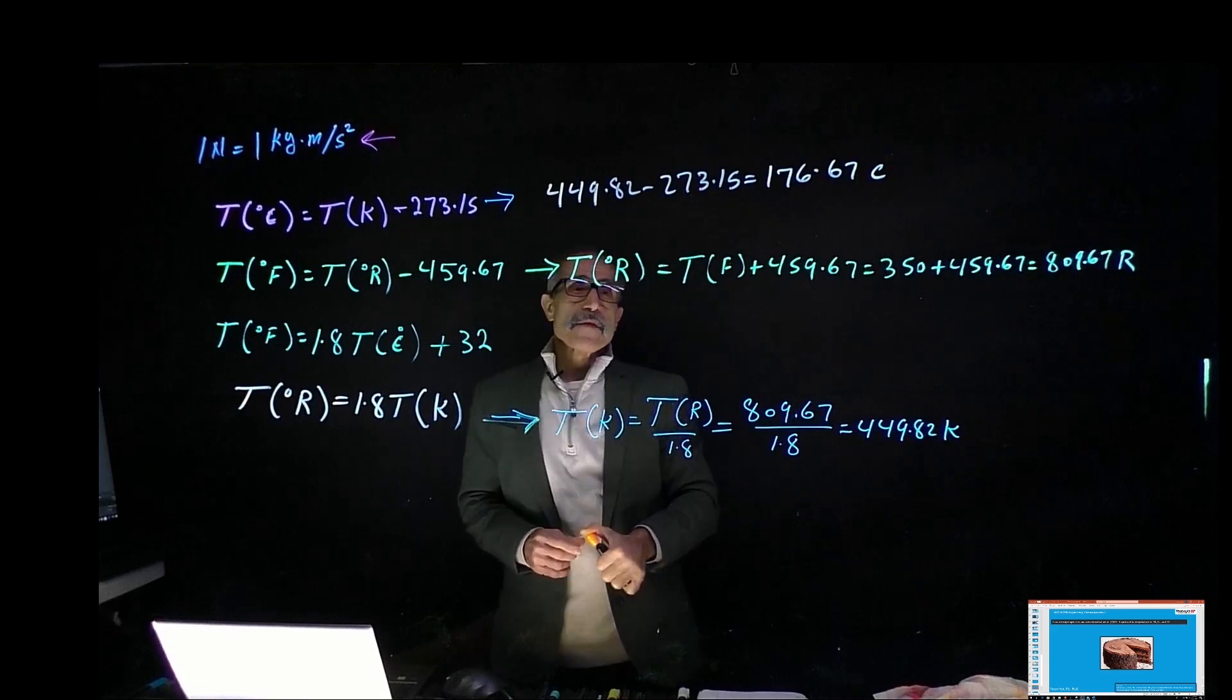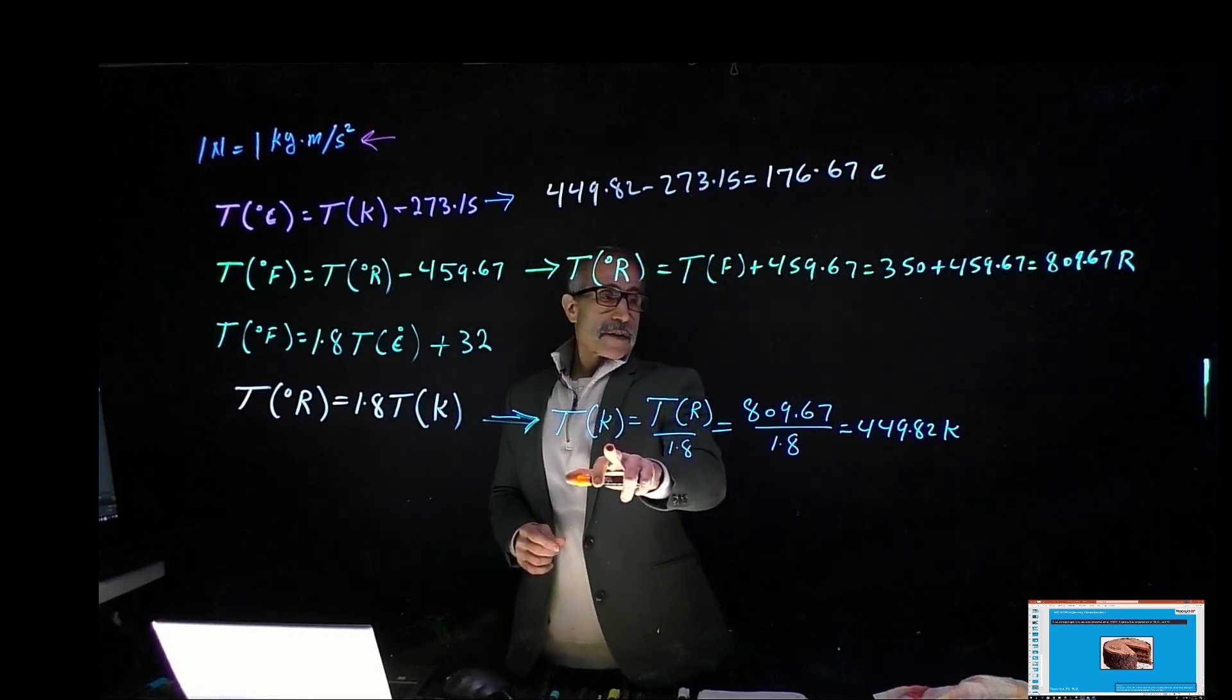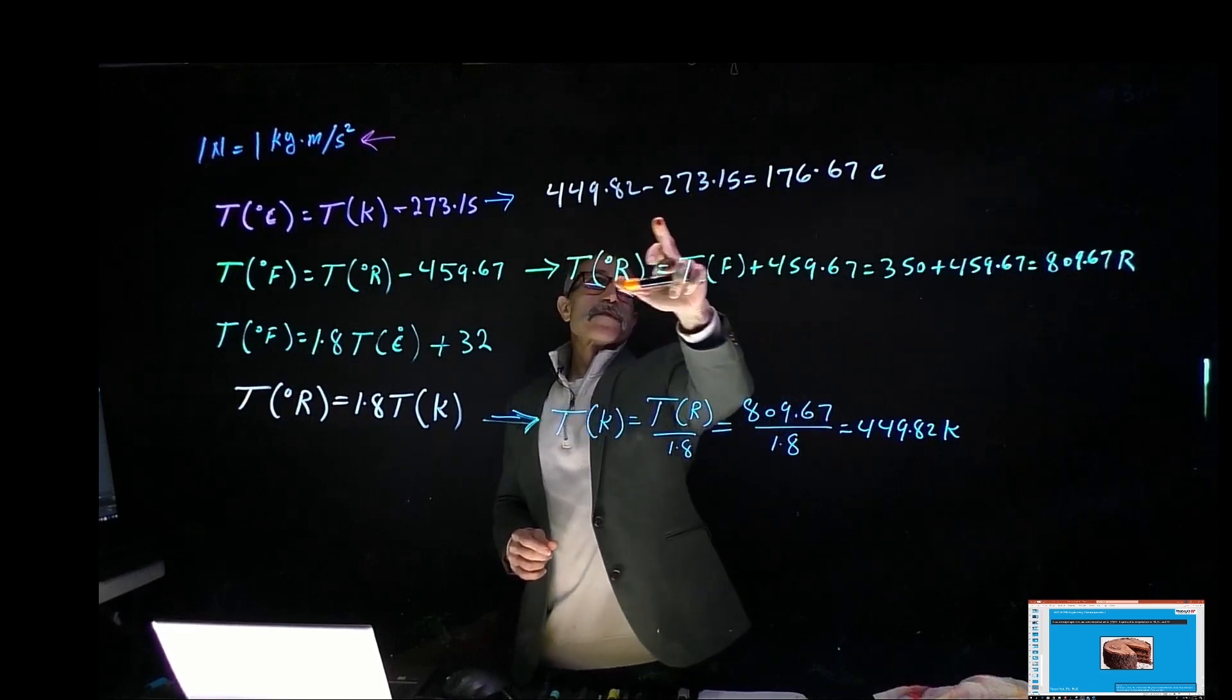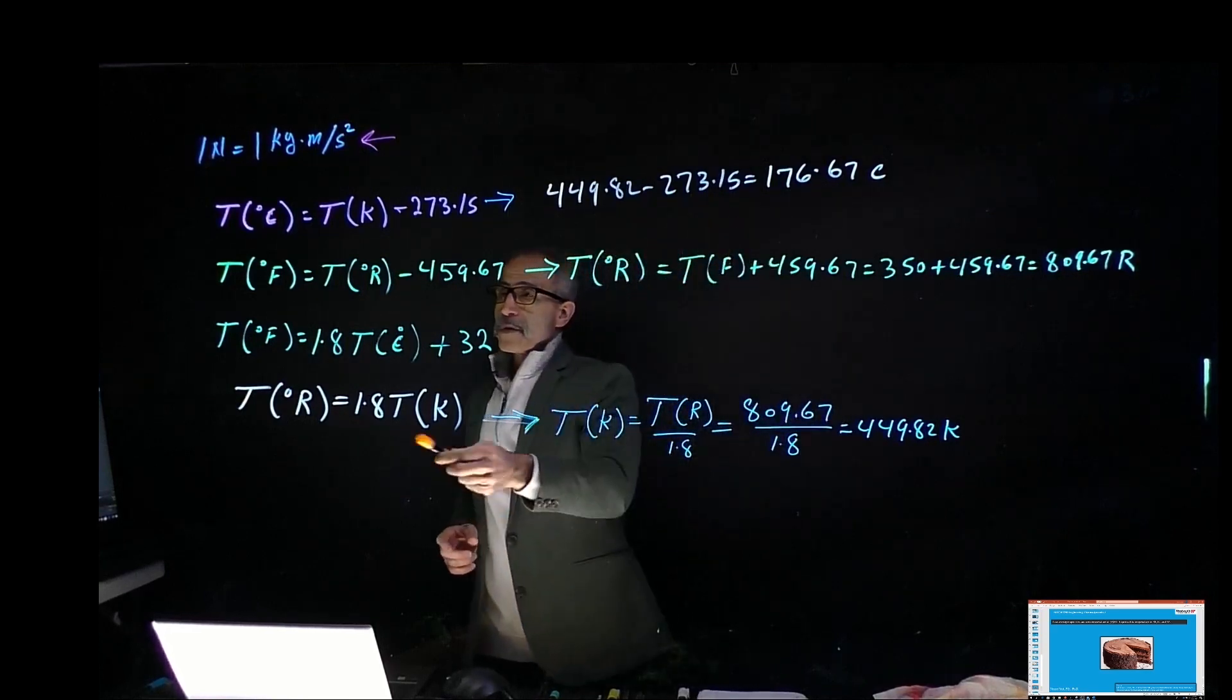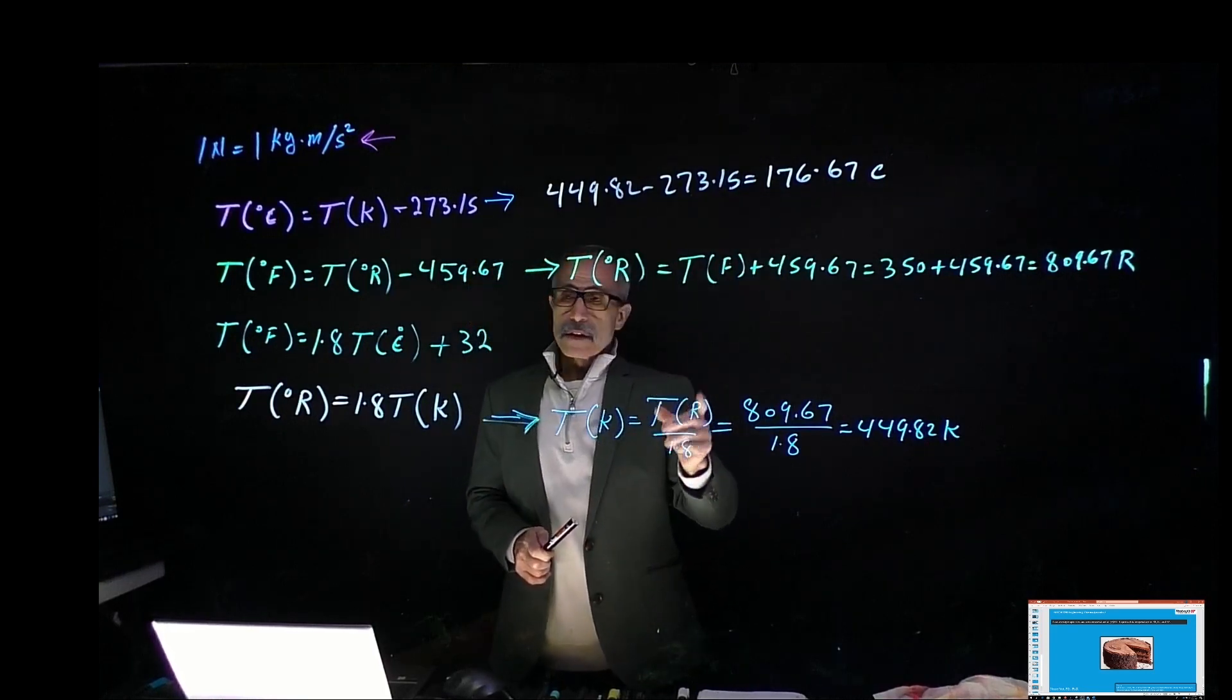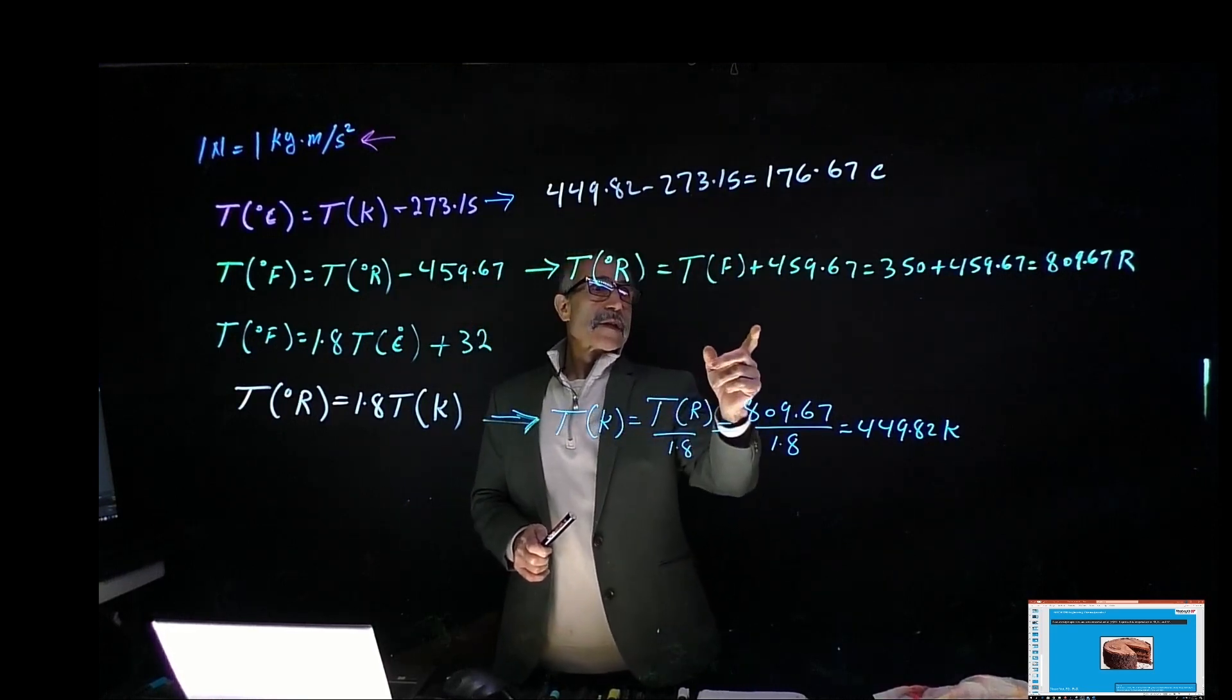So that's the temperature of the oven: at Kelvin we came out 449, at Rankine 809, at Celsius 176, and of course at Fahrenheit it is 350.